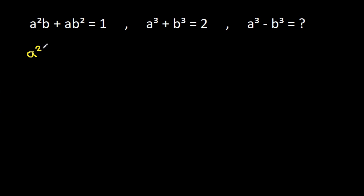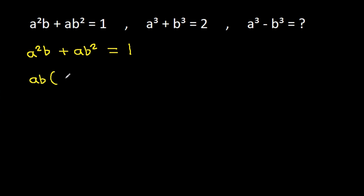We have a squared b plus a b squared is equal to 1. We can take ab common, and it will be ab times (a plus b) equals 1.